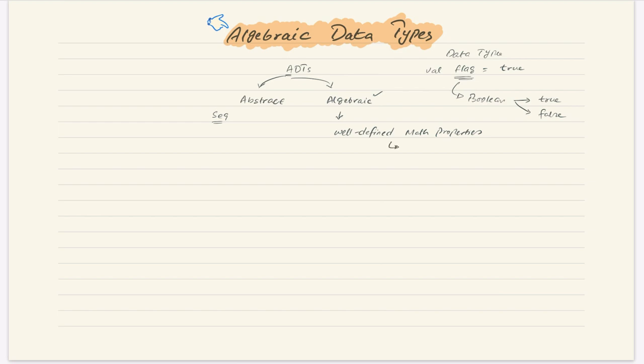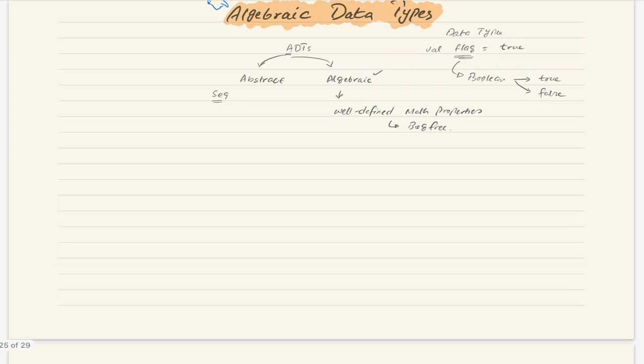What benefit do we get from ADTs — algebraic data types? We get confidence that if they are following some well-defined mathematical properties, it raises the confidence that this is bug free. Now let's understand what algebra actually is in math.